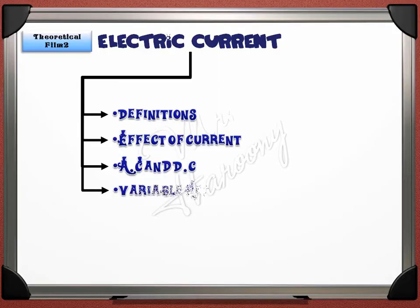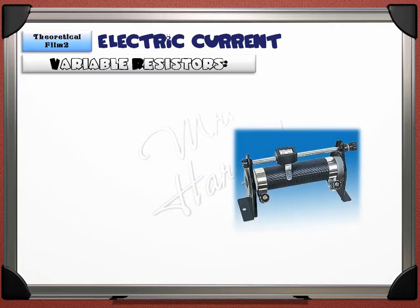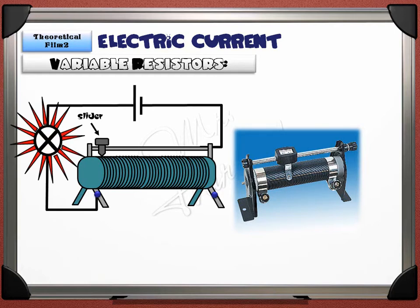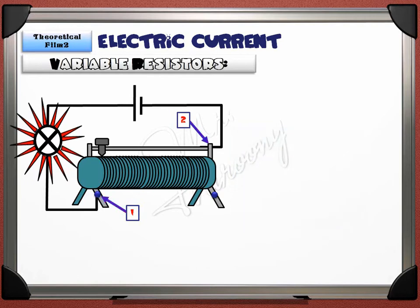The variable resistor, or rheostat, has a coil wrapped around an insulating cylinder and a slider in contact with the coil. The variable resistor is connected to the circuit with one connection from the first end of the coil and a second connection from the slider. The common circuit symbol for the variable resistor is as shown.